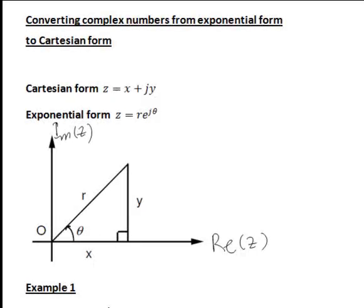Let's have a look at how we convert complex numbers from exponential form into Cartesian form. By Cartesian form we mean the form z equals x plus jy, where x on an Argand diagram is the real part of a number represented by the horizontal coordinate of its point.